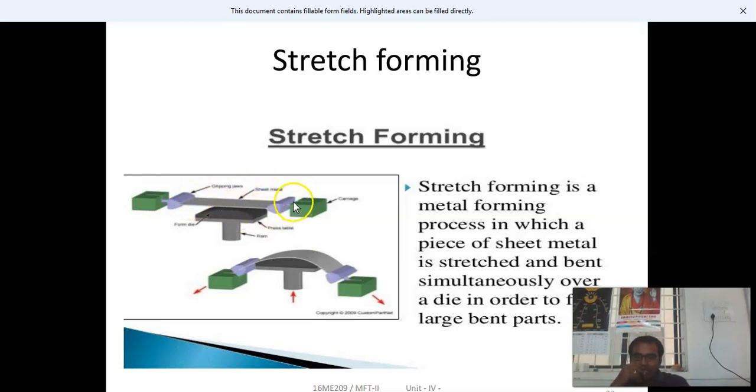The sheet metal is fitted into the die portion, which has two jaws. One end of the sheet metal is fitted into jaw 1 and the other end into jaw 2. The die or ram can move in the upper direction. The movable jaws can also stretch, pulling the sheet metal in opposite directions.